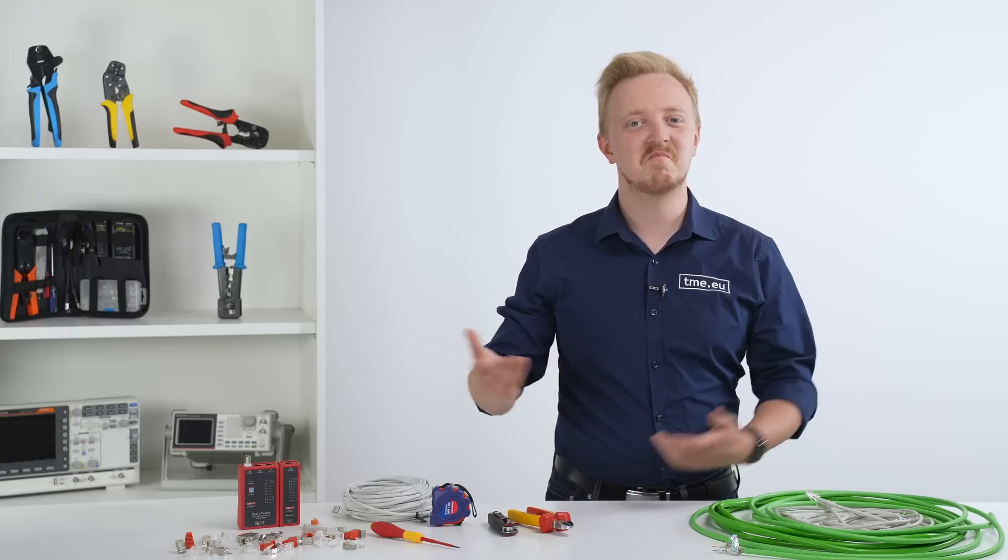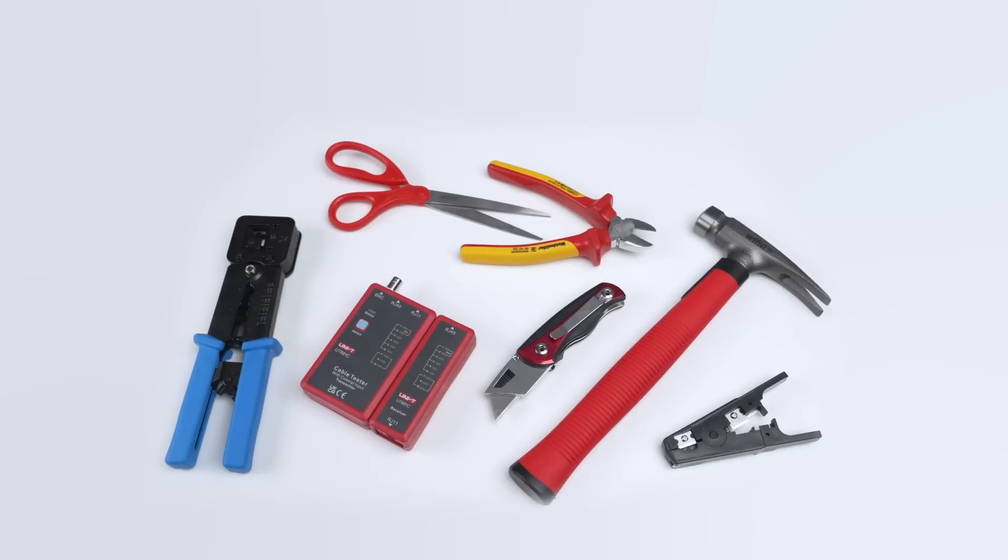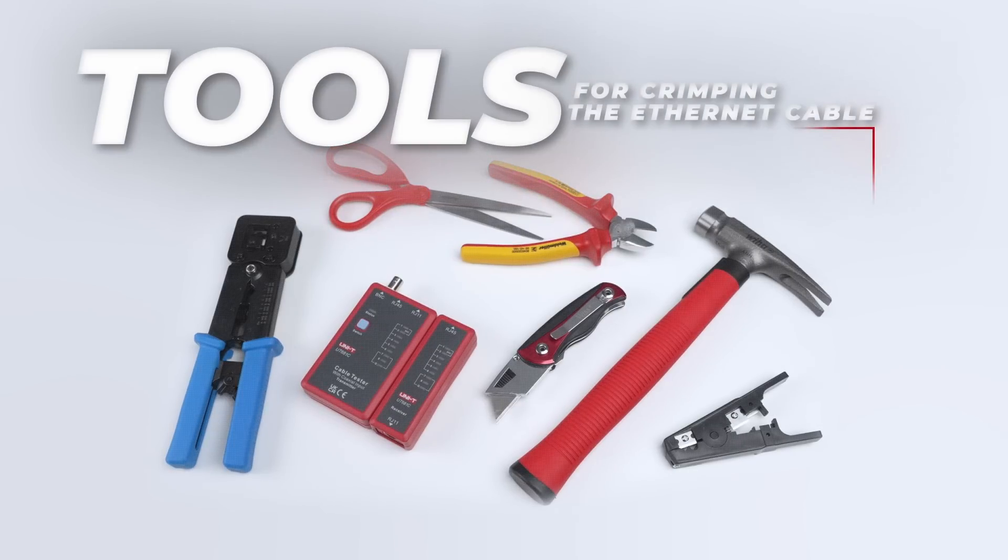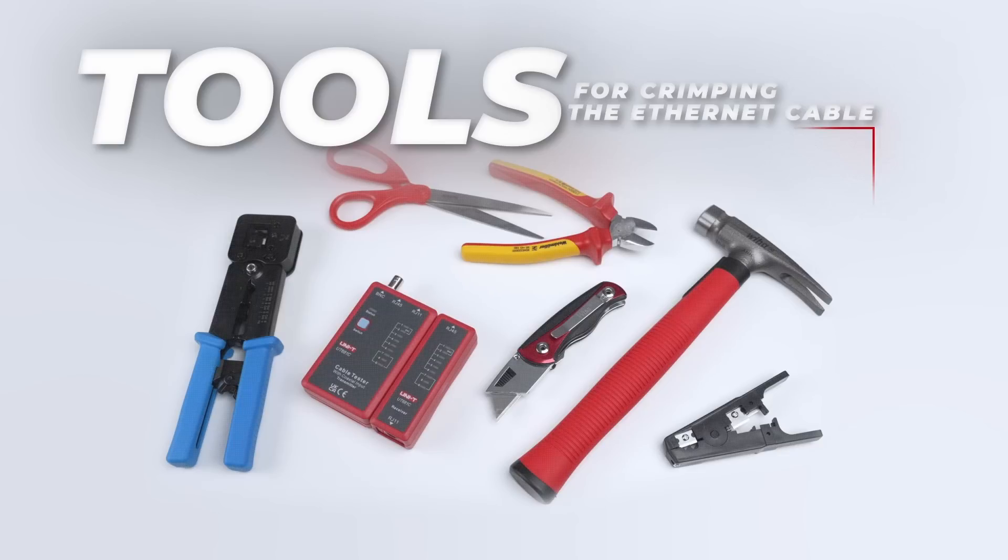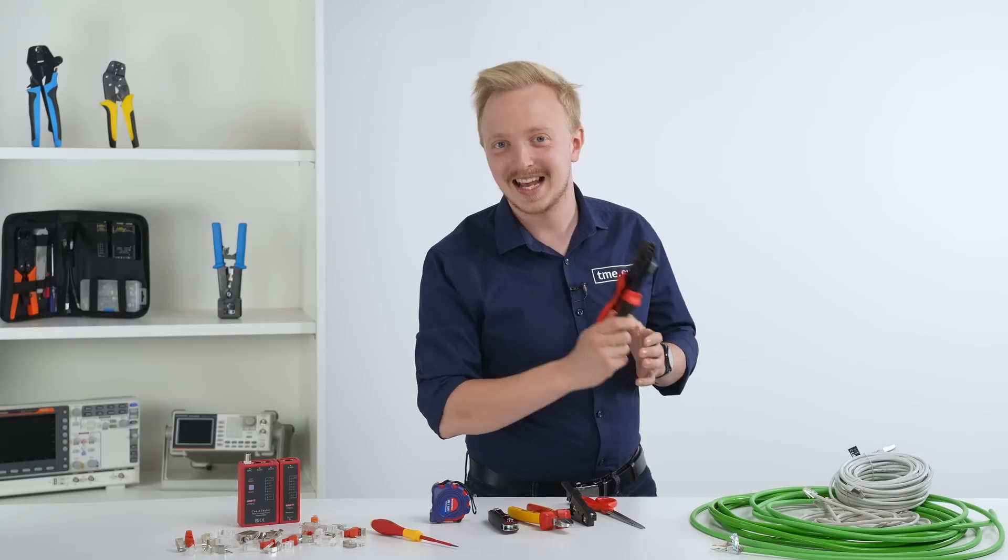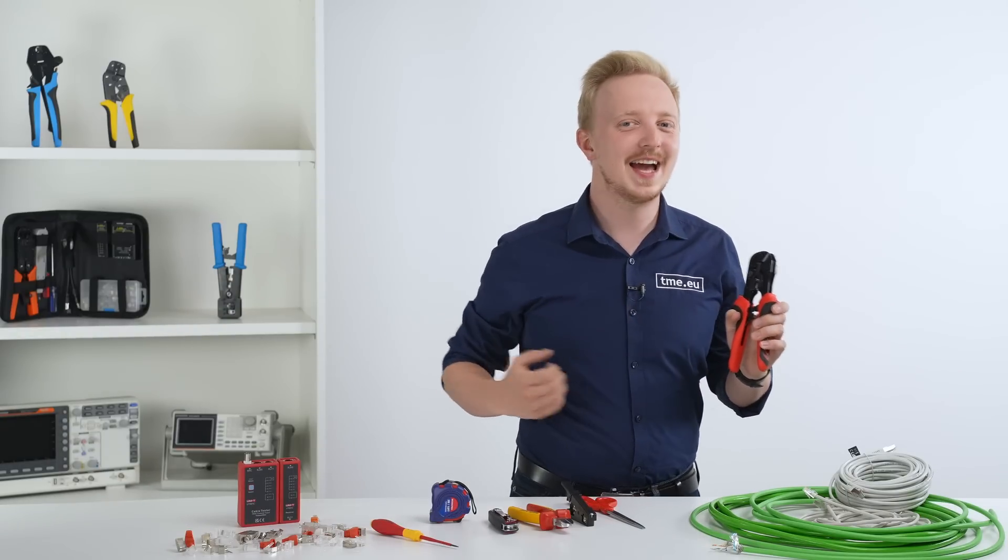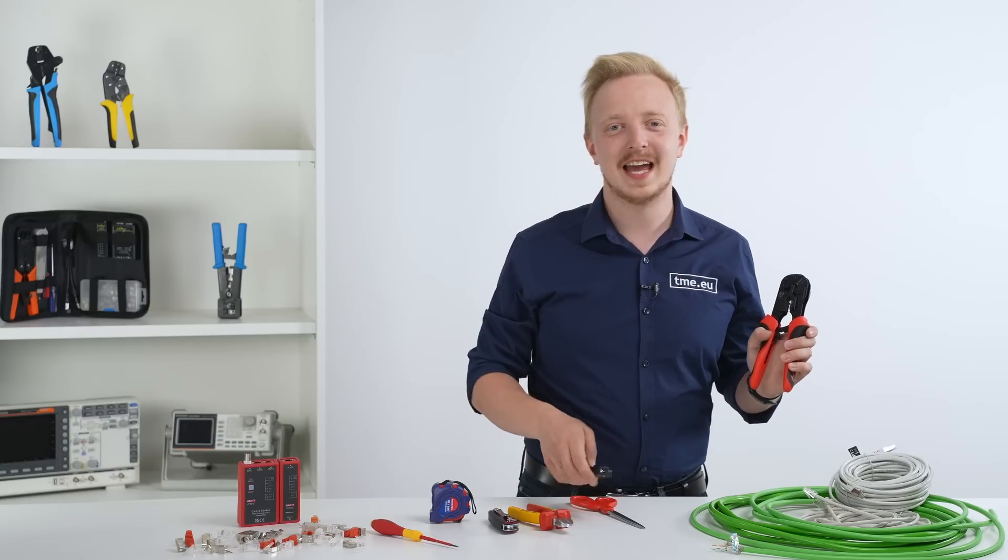With that knowledge, we can start crimping. The tools that we need are a pair of scissors to cut the cable, a stripping tool to remove the cable's outer sheath and a crimping tool to crimp the connector at the cable's end. But luckily most modern crimping tools can also cut and strip, so we don't need extra tools.